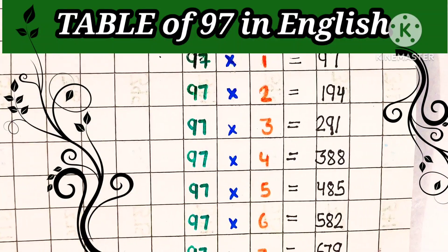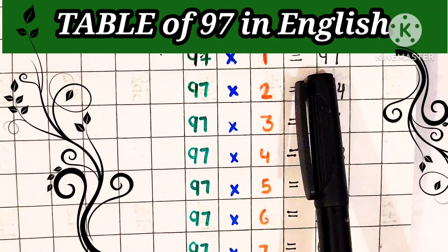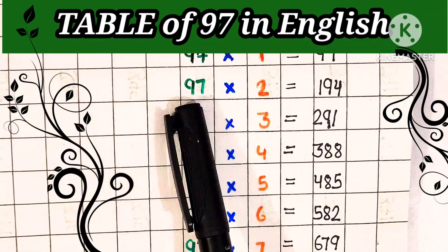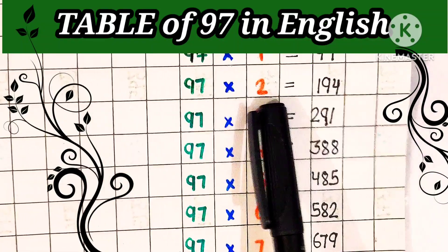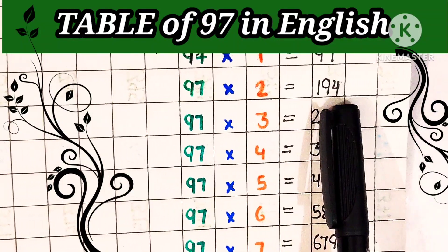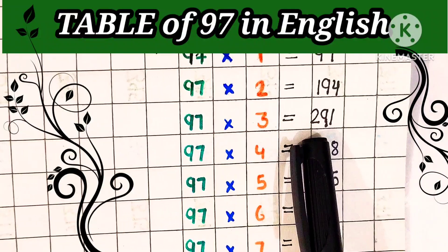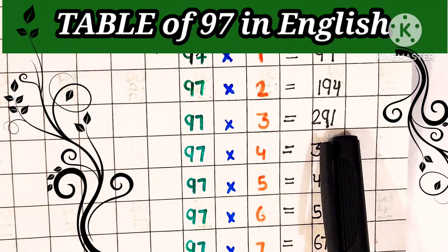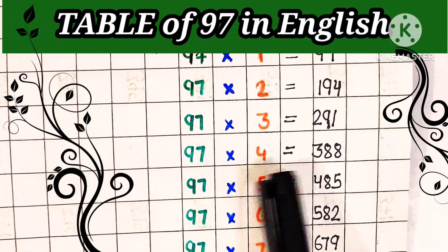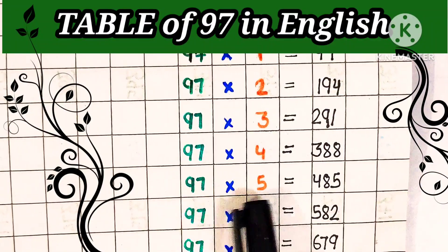repeat table. 97 ones are 97, 97 twos are 194, 97 threes are 291, 97 fours are 388.